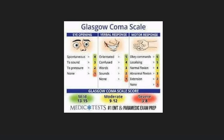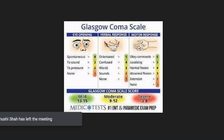GCS is not used in pediatrics — a baby cannot respond with words or show orientation. It may be used in older children, perhaps five years and above, who can talk and respond. The scoring ranges are: 3–8 is severe TBI or severe loss of consciousness, 9–12 is moderate, and 13–15 is mild. Abnormal flexion-extension may follow flexion-extension synergy patterns as well.